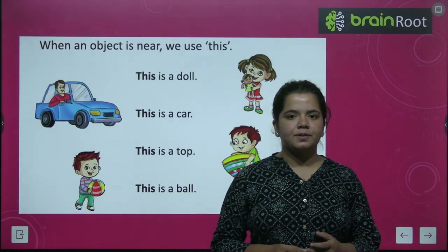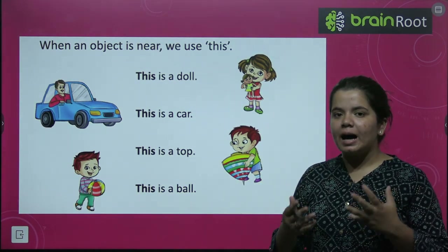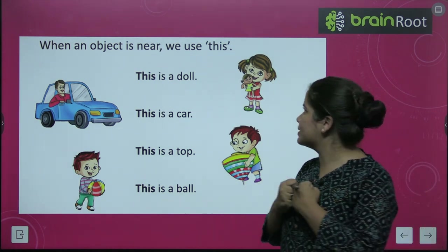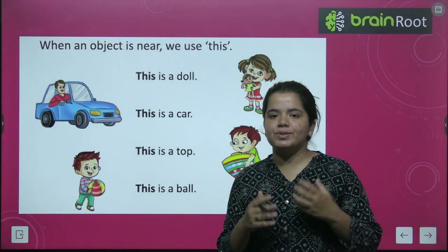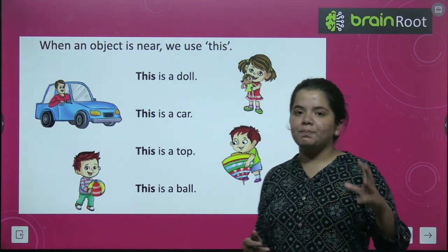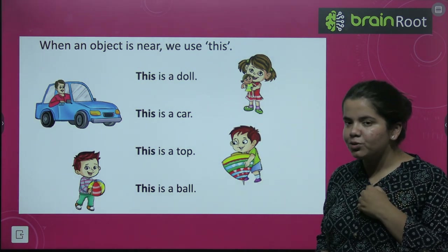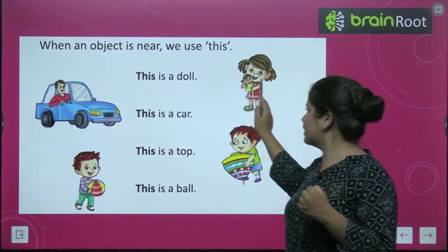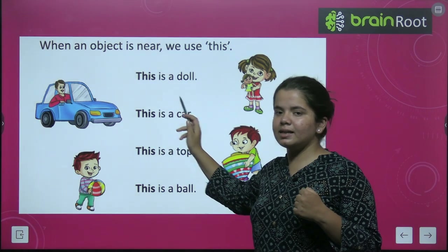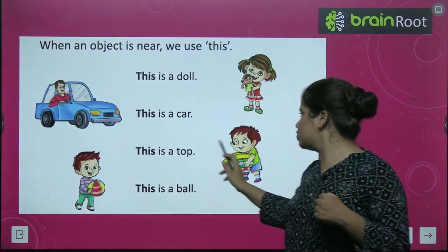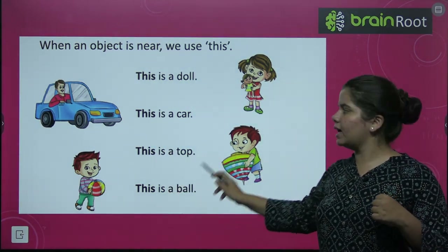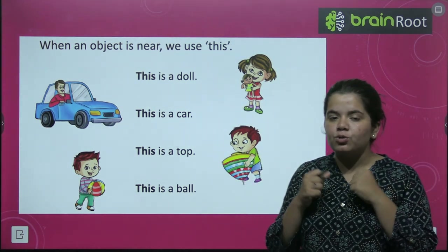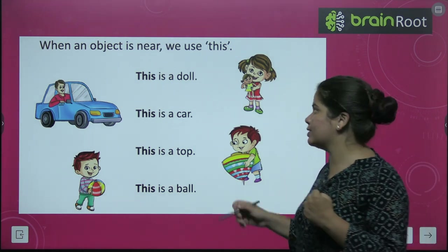आपको ध्यान रखना है इस चाप्टर में कि जब भी कोई चीज आपके पास हो, मतलब आपके नियर हो, उसके लिए हमेशा आप 'this' use करेंगे. जैसे: this is a doll, this is a car, this is a top, this is a ball. तो 'this' कभी यूज होगा बच्चों, जब कोई चीज आपके पास हो.